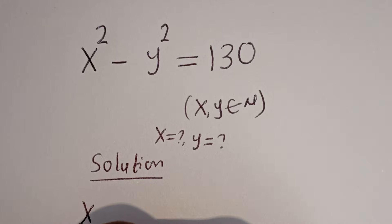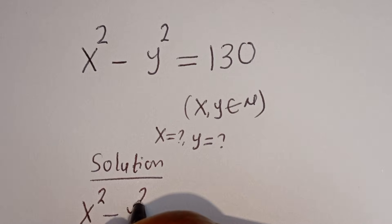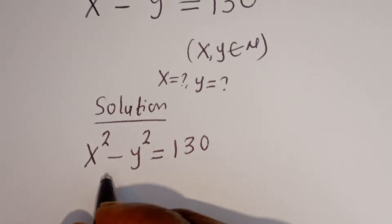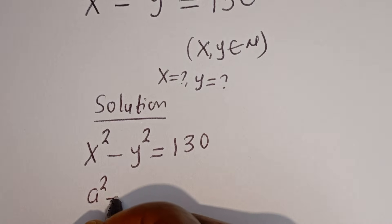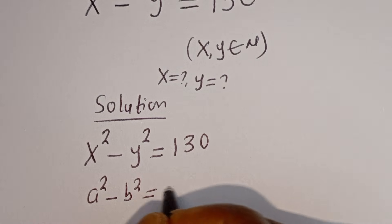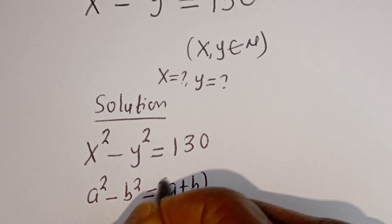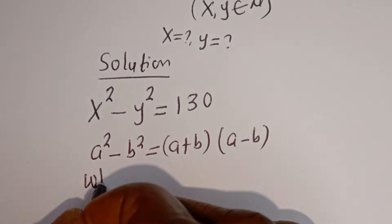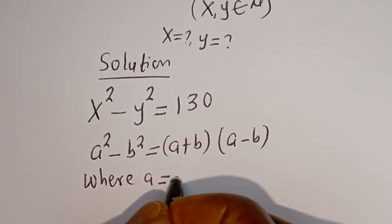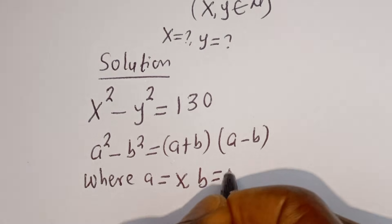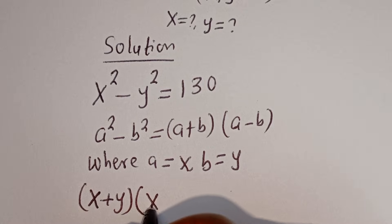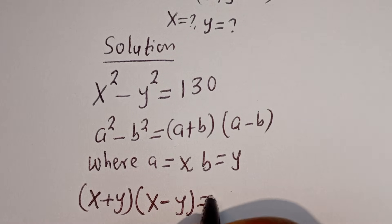We have X squared minus Y squared is equal to 130. Take note that if you have A squared minus B squared, this is equal to (A + B)(A − B). Where A is equal to X and B is equal to Y, this can be written as (X + Y)(X − Y) is equal to 130.